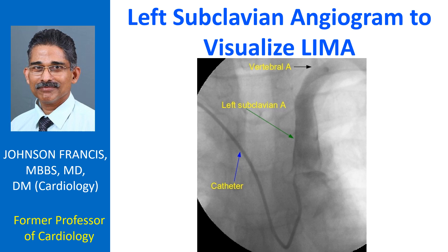Left subclavian angiogram by trans radial route using a tiger catheter. Left subclavian angiogram is usually taken towards the end of a coronary angiography procedure when multivessel disease or left main coronary artery disease requiring coronary artery bypass grafting is documented. This is in order to visualize the left internal mammary artery to be used for bypass grafting.